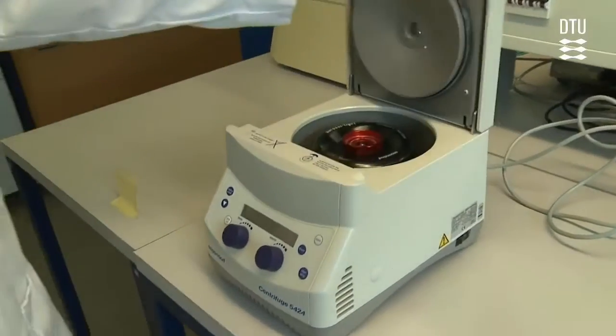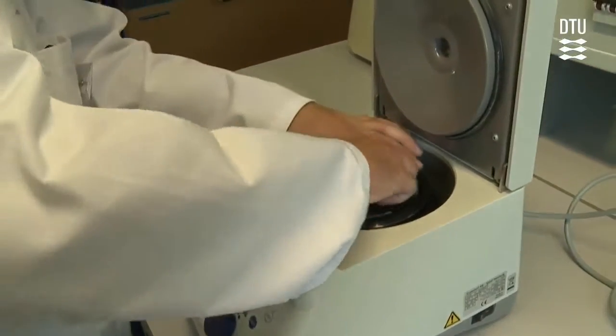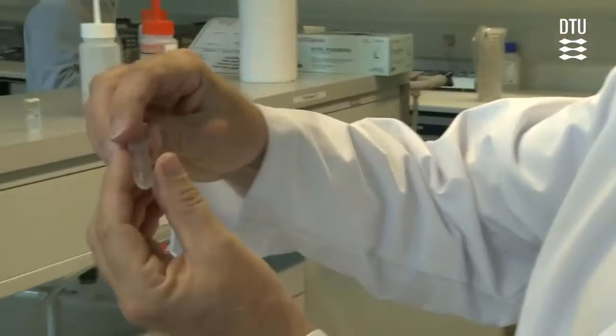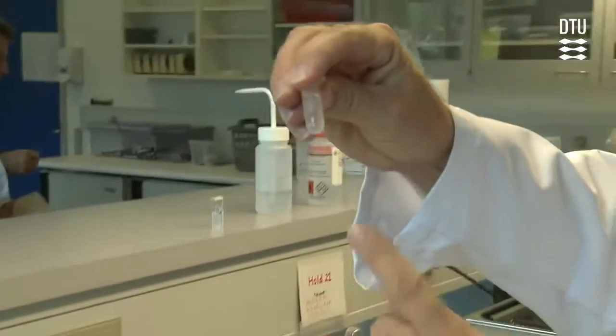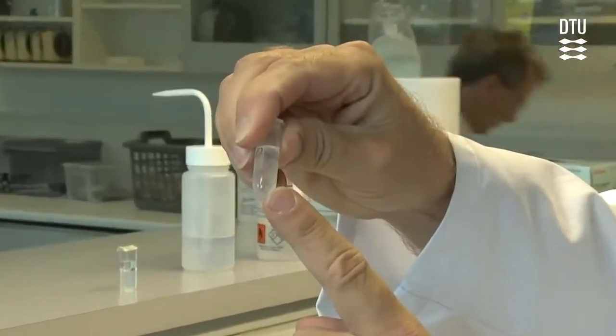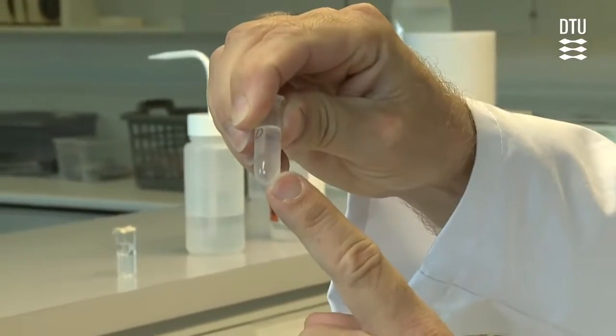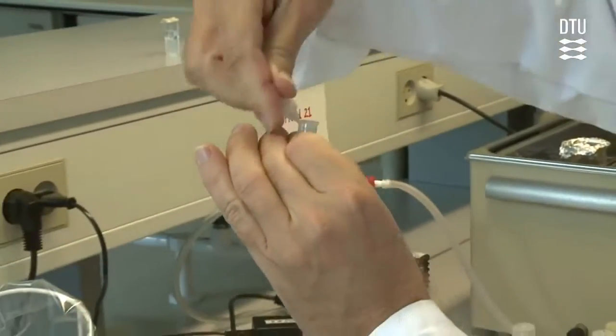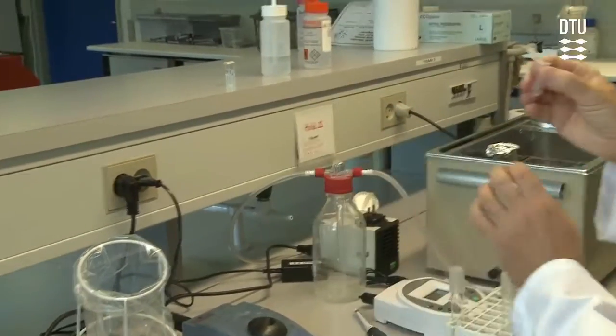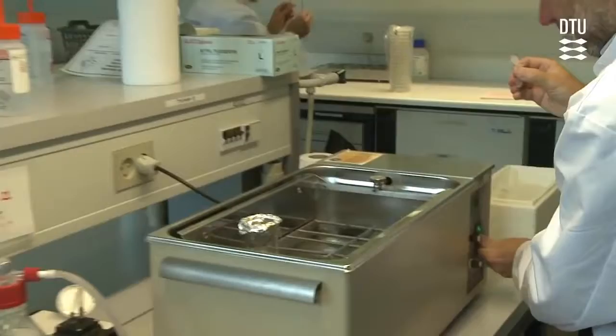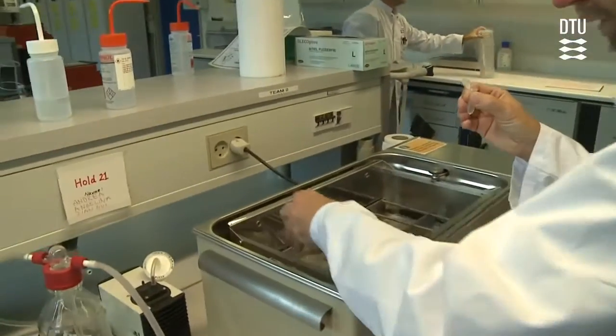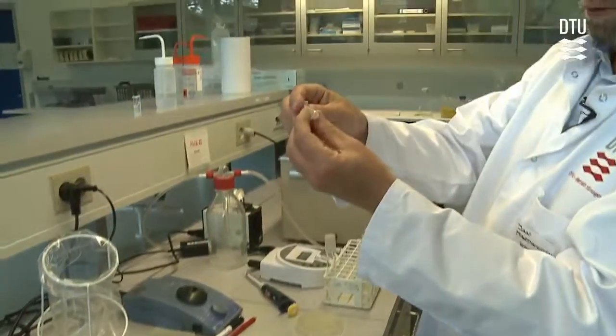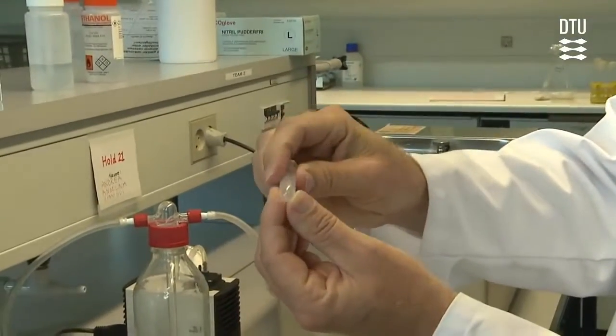After 2 minutes, the cells are spun down, and you'll see them, hopefully, at the bottom of the tube. You can see the pellet there. Then you can decant the medium into something, for instance the old culture flask, because you're not going to use the culture anymore.